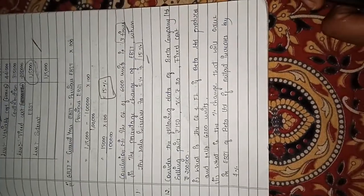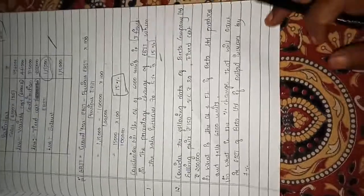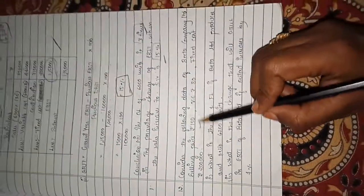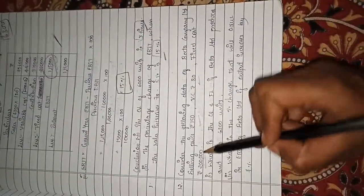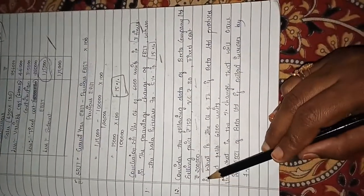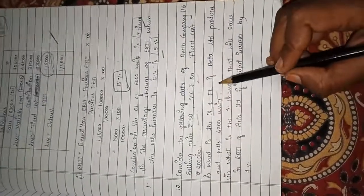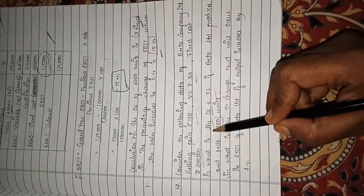Good morning students. We shall discuss the next problem, which is of the same method as we discussed yesterday. Consider the following data of Beta Company Limited: selling price 150, variable cost 80, fixed cost 2 lakhs. Question number one: what is the operating leverage and financial leverage if Beta Limited produces and sells 6,200 units?